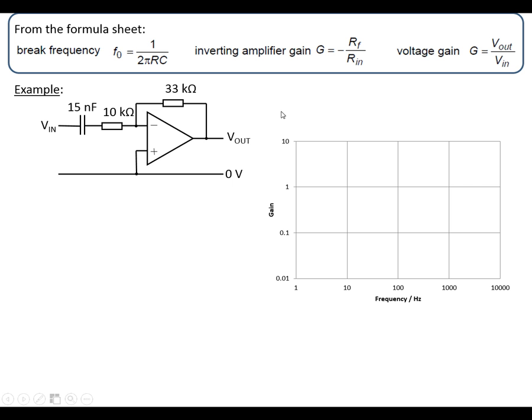Let's go for an example. So with this circuit here, what we can do straight away is work out the maximum gain, RF over Rin, and that's going to end up being 3.3. So at high frequencies, we're going to get a gain of 3.3, which is midway between 1 and 10 on the logarithmic scale.